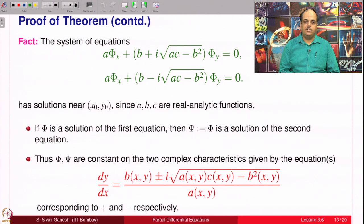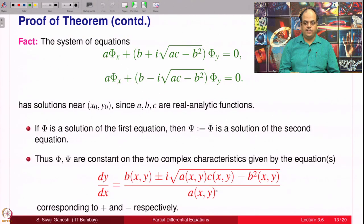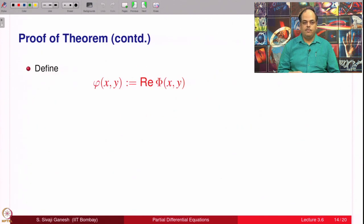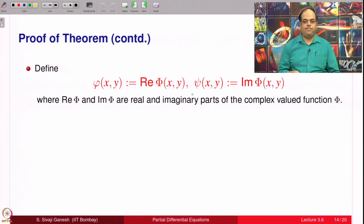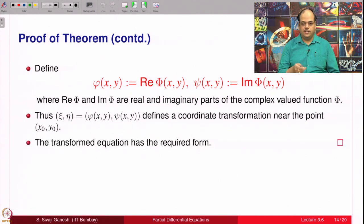Therefore, φ and ψ are constant on the two complex characteristics; the right hand side is a complex valued function. We have not studied in our Picard's theorem how to solve such equations. This is where it is important that we use our hypothesis and show that solutions exist. Define small φ(x,y) equal to the real part of capital Φ, and ψ = imaginary part of Φ. This defines a coordinate transformation near the point—that is left as an exercise, very easy. And the transformed equation has the required form because we made what we want: a equal to c and b equal to 0. Therefore, we will get this.